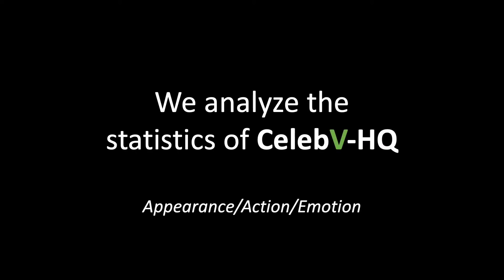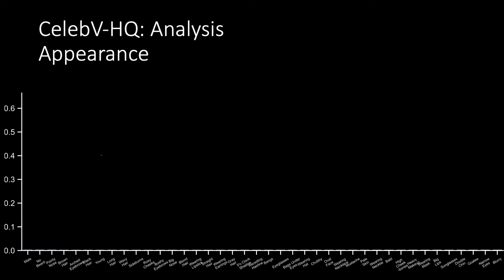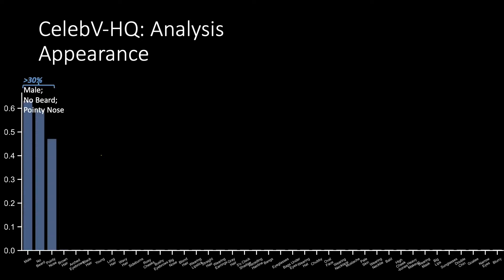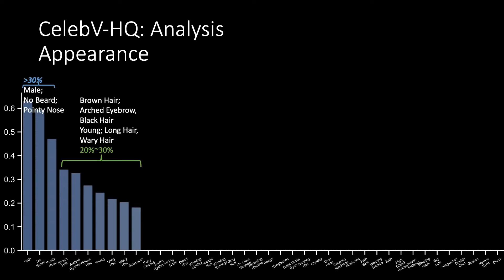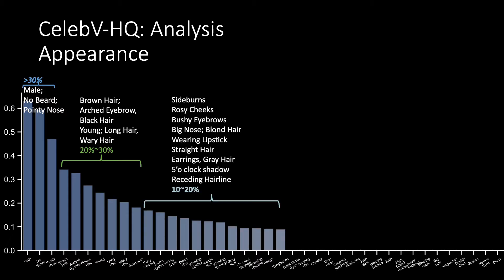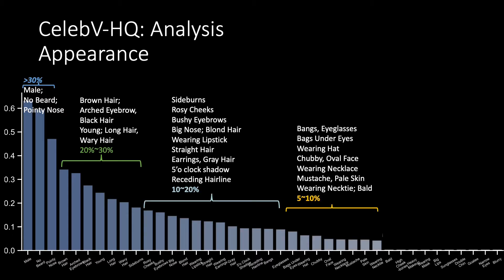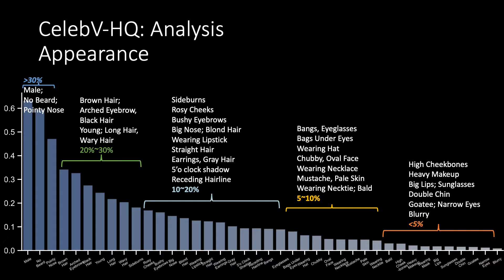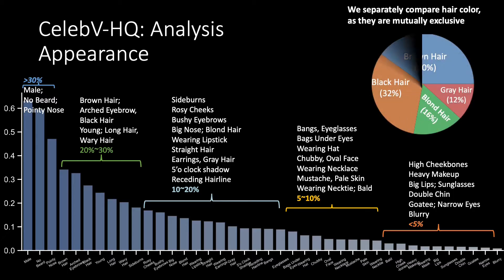We perform a comprehensive analysis of data statistics. CelebVHQ contains a total of 40 appearance attributes, of which 10 attributes account for more than 20% each, while more than 10 attributes account for about 10% each. The overall attribute distribution has a long tail, with 10 attributes accounting for less than 5% each. We compare hair colors separately, as they are mutually exclusive. The distribution in hair color is even, with no significant deviations.